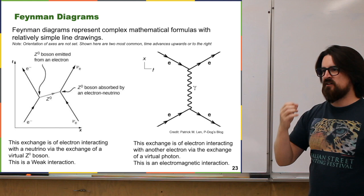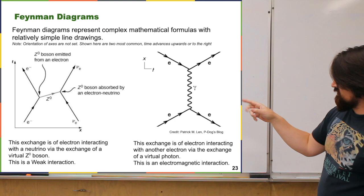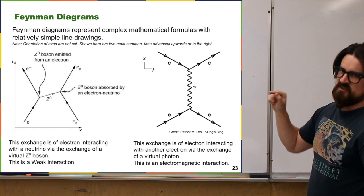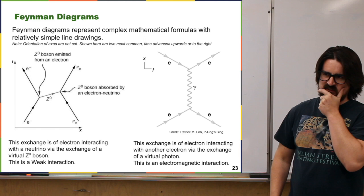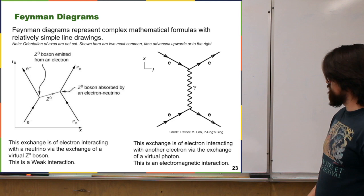It can get very confusing — real and virtual stuff. The simplest way to think about virtual particles is in a Feynman diagram: those are the particles that don't exit the diagram. In the picture there, the electron and the electron neutrino are both coming from outside, doing this exchange, and then leaving — so those are real. The Z0 does not exist outside of that diagram; that's a virtual particle. Same thing with the photon — it doesn't get outside of this diagram, so it's a virtual photon. Don't worry too much about what it means to be real versus virtual, but if you're looking at a Feynman diagram, the virtual ones are just the ones that stay inside the diagram.